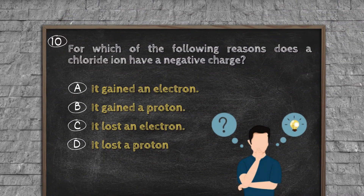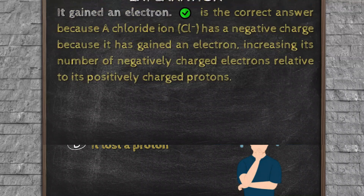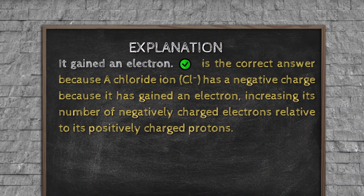Question number ten. For which of the following reasons does a chloride ion have a negative charge? Option A, it gained an electron. Option B, it gained a proton. Option C, it lost an electron. Option D, it lost a proton. Explanation: It gained an electron is the correct answer because a chloride ion Cl⁻ has a negative charge because it has gained an electron, increasing its number of negatively charged electrons relative to its positively charged protons.